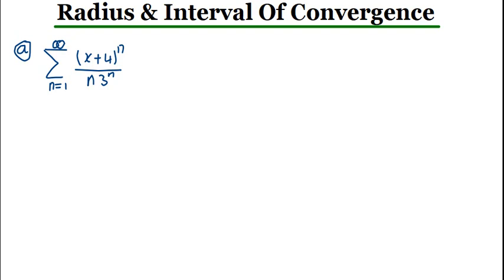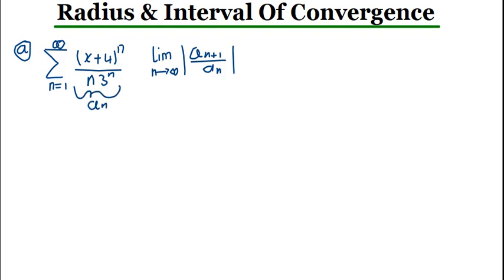Just a recap of the ratio test: we evaluate the limit as N approaches infinity of the absolute value of A sub N+1 divided by A sub N. So everything in the original series is your A sub N. Your A sub N+1 simply means anywhere there is N, you add 1.